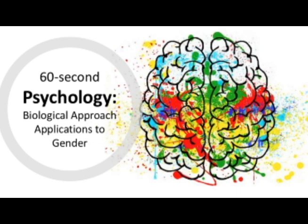Testosterone can also be linked to genetic conditions and therefore atypical development, essentially causing a fetus not to develop typically for its biological sex. For example, a condition called congenital adrenal hyperplasia results in a female fetus being overexposed to testosterone. This results in abnormal development of genitalia, and 5% of people with this condition choose to live as a male despite being biologically female.